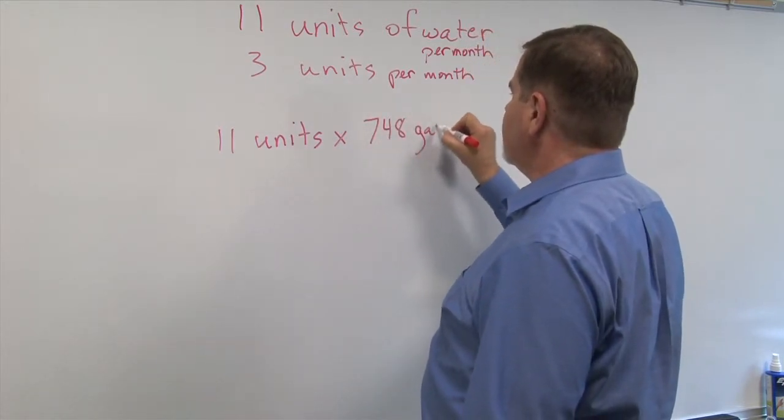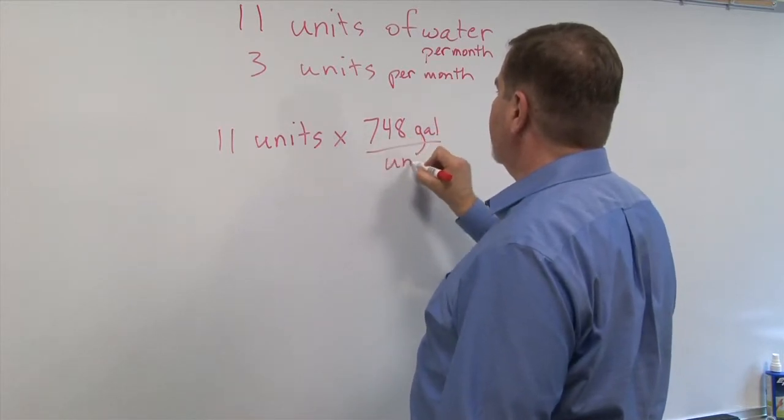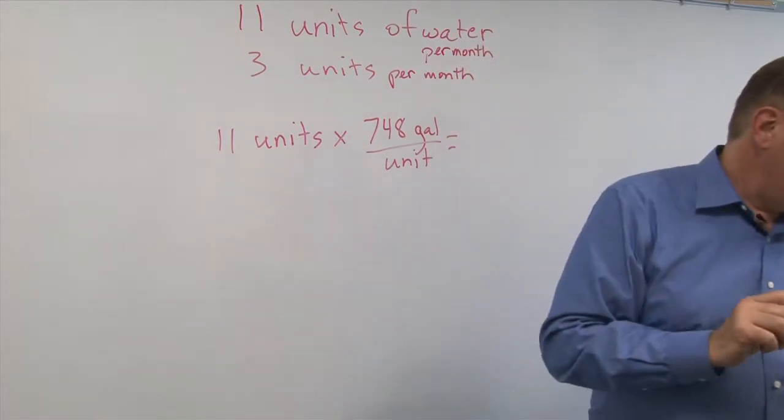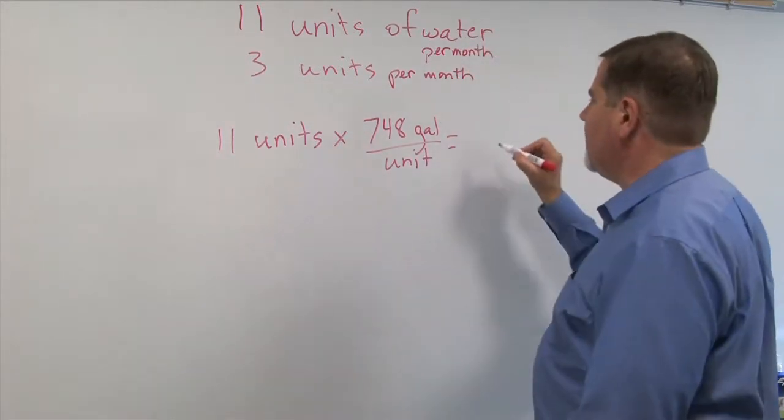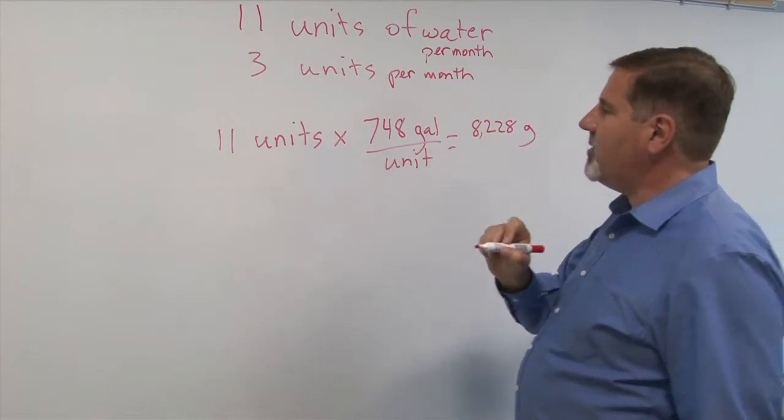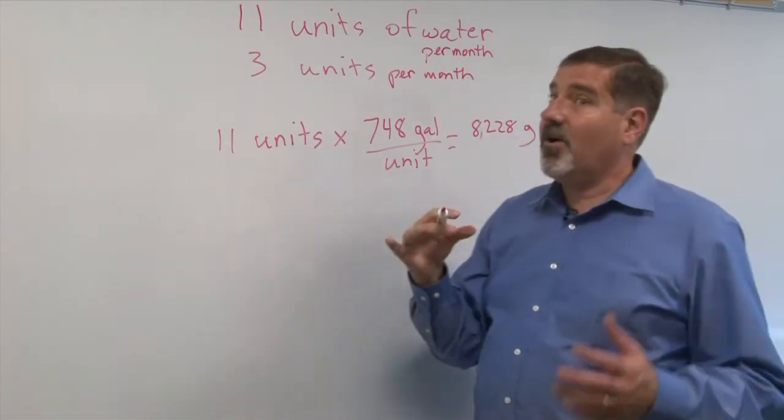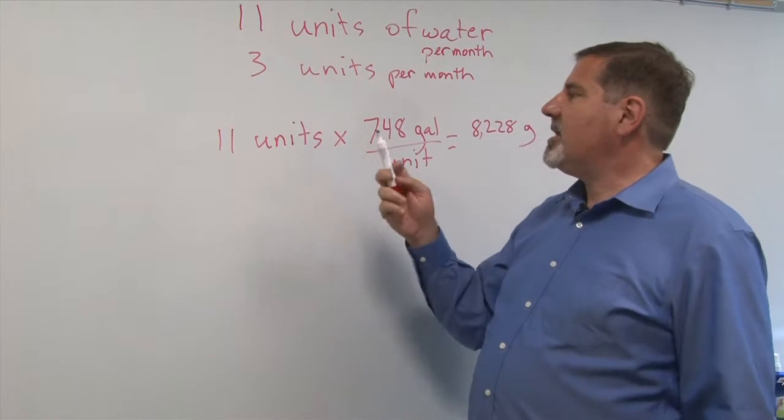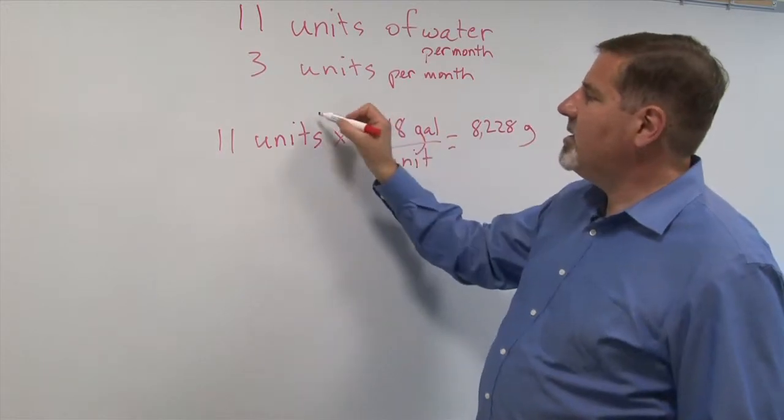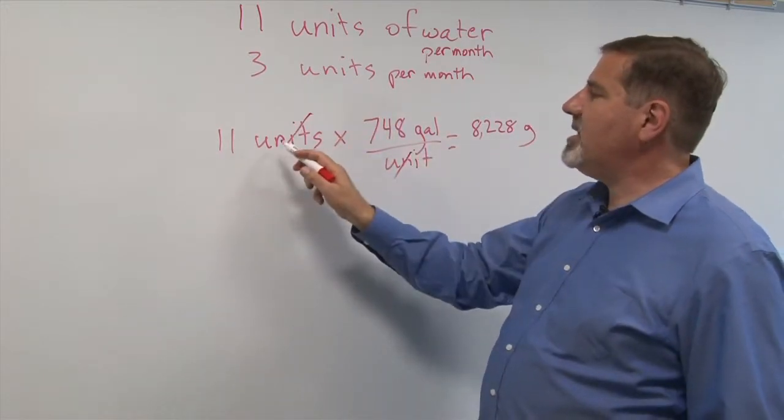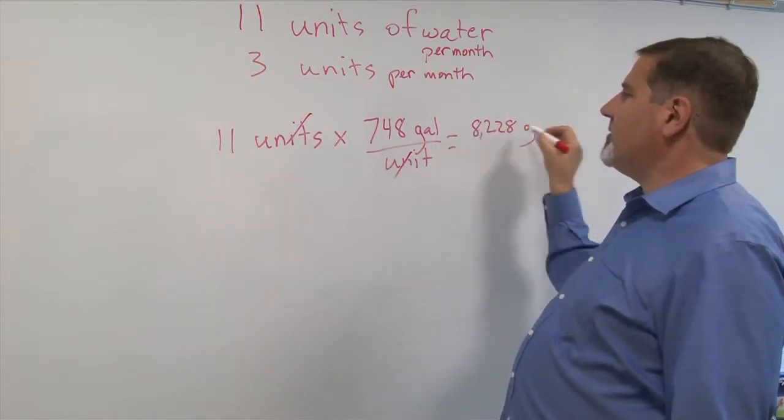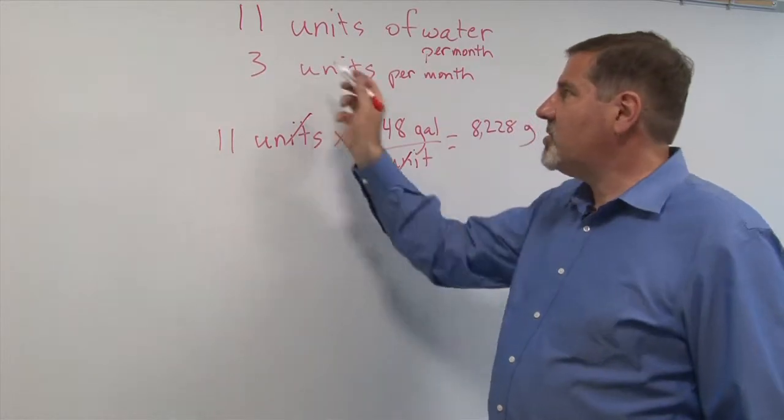We had 11 units per month and 3 units per month a year later. First we'll do our conversion: 11 units times 748 gallons per unit, and if we do the math we get 8,228 gallons. Now the key thing here, and this is true for all conversions, is that if you have something in the numerator and the same thing in the denominator, you cancel them. So what used to be units of water is now gallons.